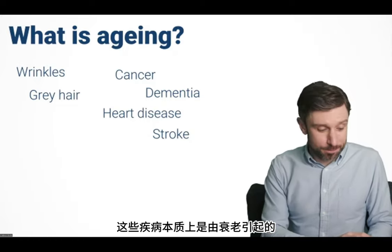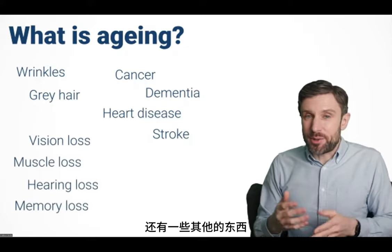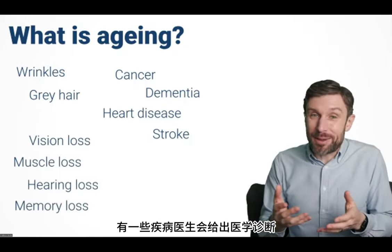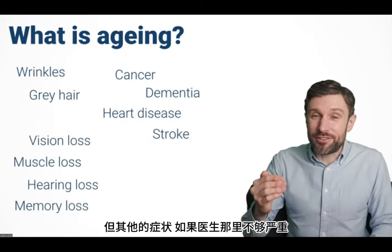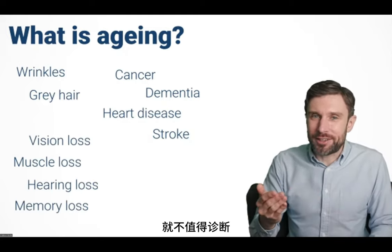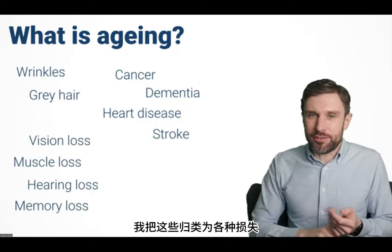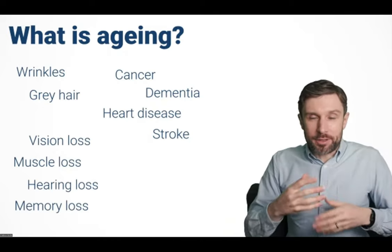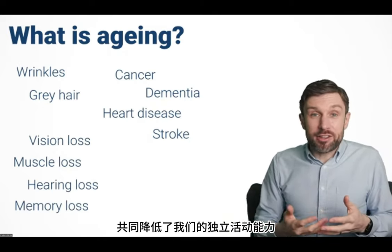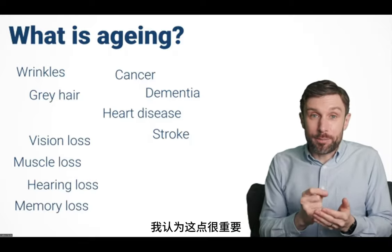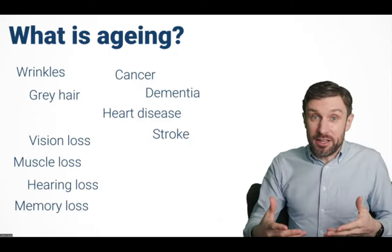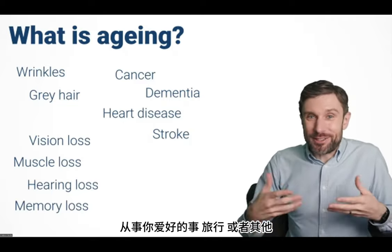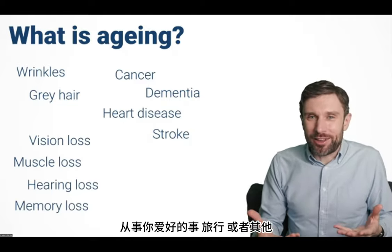Beyond diseases, there are other things we wouldn't necessarily call diseases — some get a medical diagnosis, others don't if they're not severe enough. I group these together as various kinds of loss: loss of hearing, loss of sight, loss of muscle strength. All of these conspire to decrease our independence as we get older — the ability to play with your grandkids, engage in hobbies, travel, whatever gives your life meaning — slowly sapped away as we age.